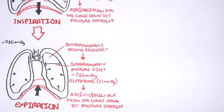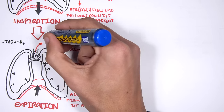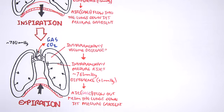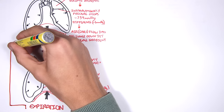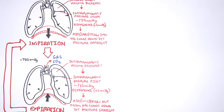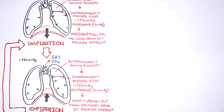After expiration we have inspiration again, and the cycle continues. Of course we have some voluntary control over our breathing and can hold our breath, but this only lasts a short time before our brain overrides voluntary control. Now let's put all of this together and look at the mechanism of breathing from different angles.